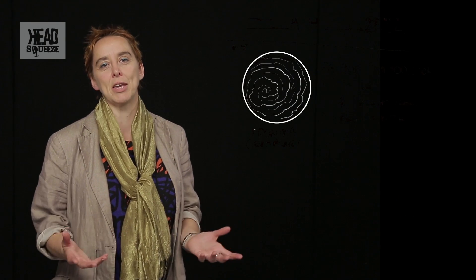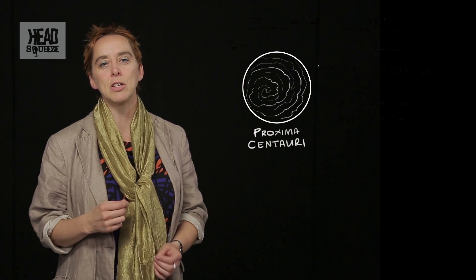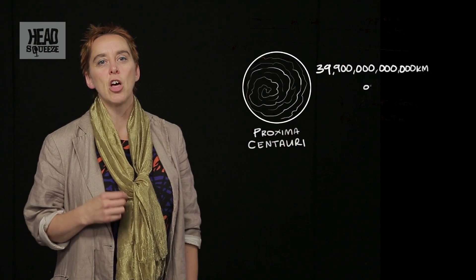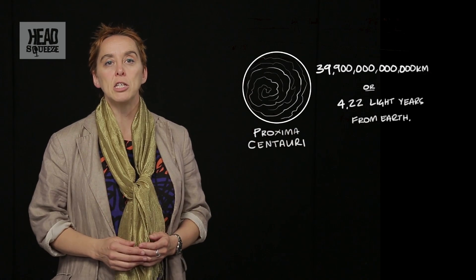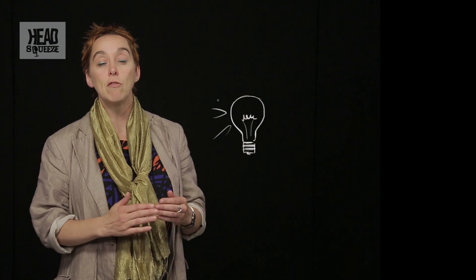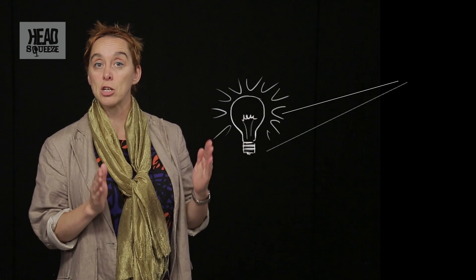Our nearest star is Proxima Centauri. I say our nearest, it's 39,900,000,000,000 kilometers away, or to put it more simply, 4.22 light-years. So-called because it would take light traveling at the speed of light, 186,000 miles per second, 4.22 years to reach us from there.